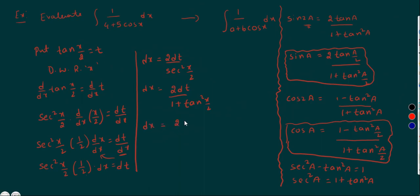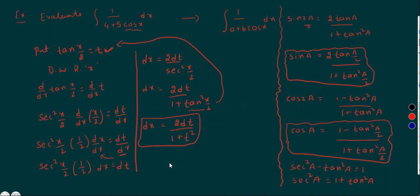Since tan(x/2) equals t, dx equals 2dt by (1 plus t square). Now I want cos x. Using the sub-multiple formula, cos a = (1 minus tan square(a/2)) by (1 plus tan square(a/2)), so cos x = (1 minus tan square(x/2)) by (1 plus tan square(x/2)) = (1 minus t square) by (1 plus t square). Understood up to here?